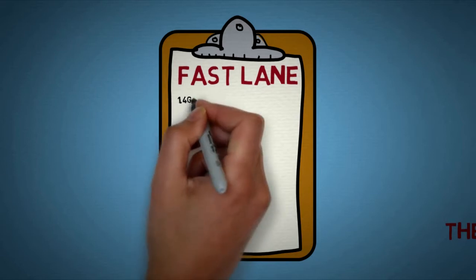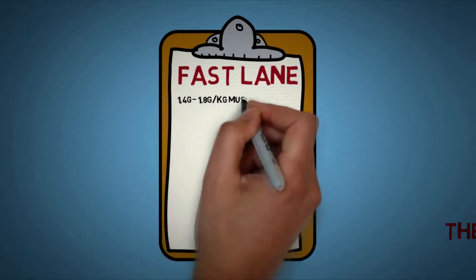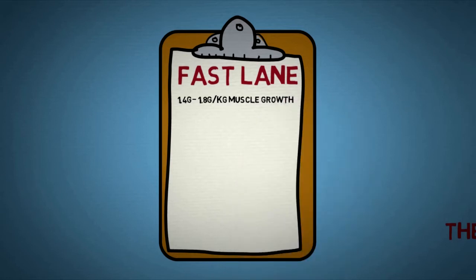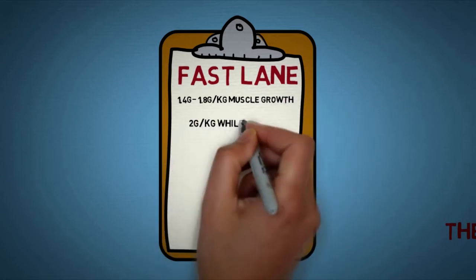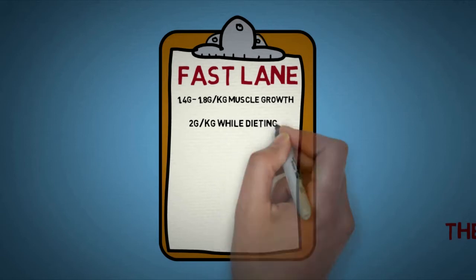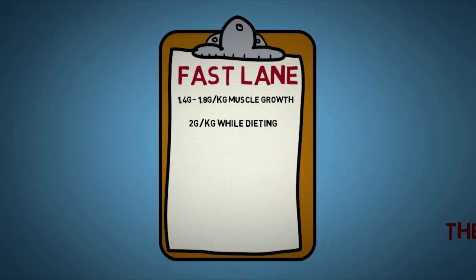Studies showed that for best results considering muscle growth, your body only needs 1.4 to 1.8 grams of protein per kilogram of body weight. While dieting you need up to 2 grams of protein per kilogram of body weight to prevent muscle loss.